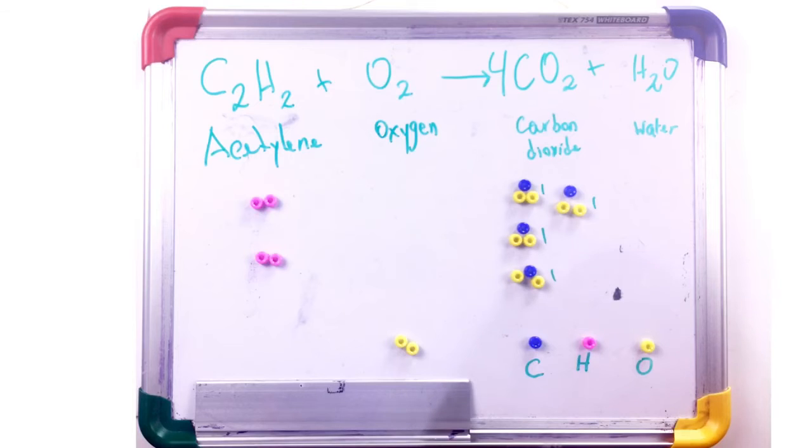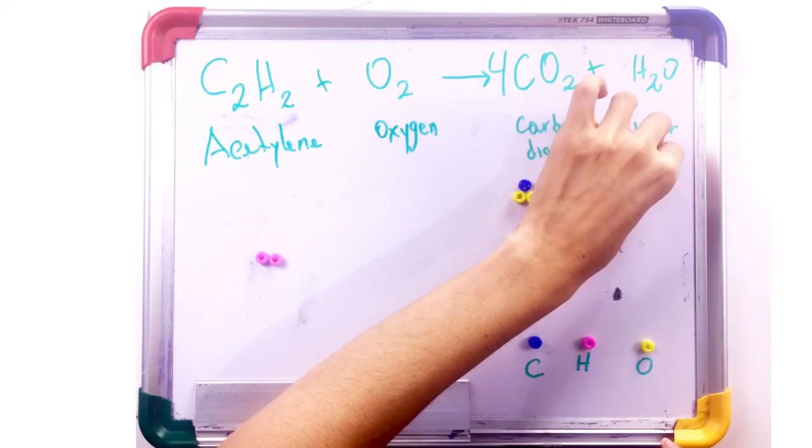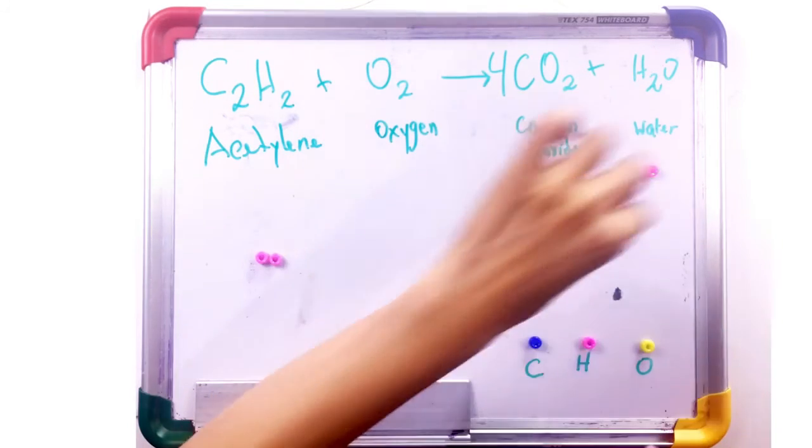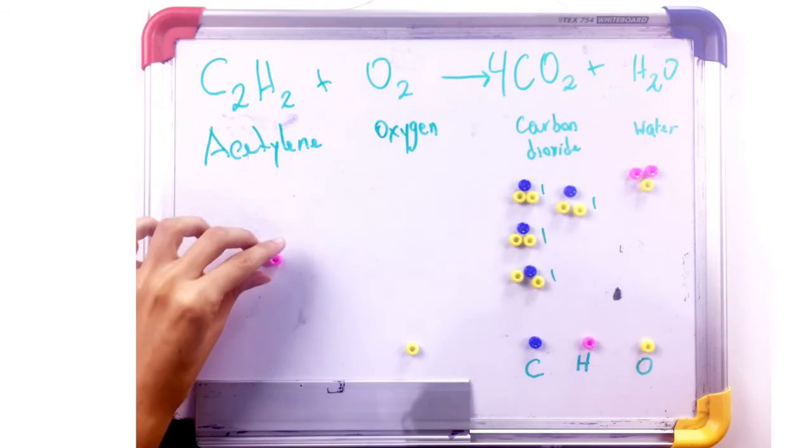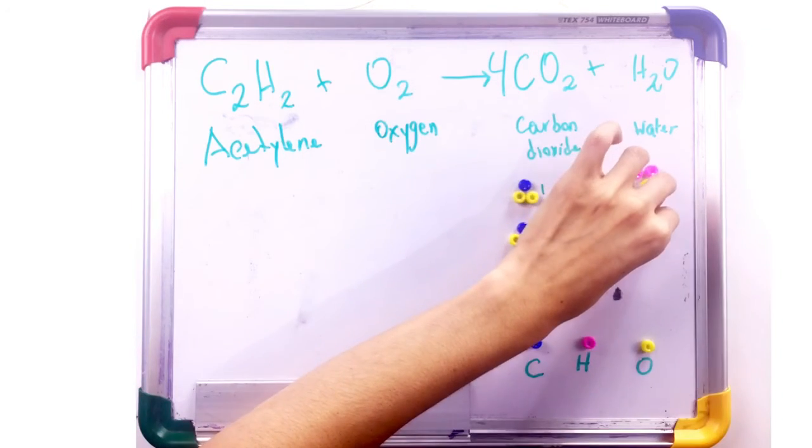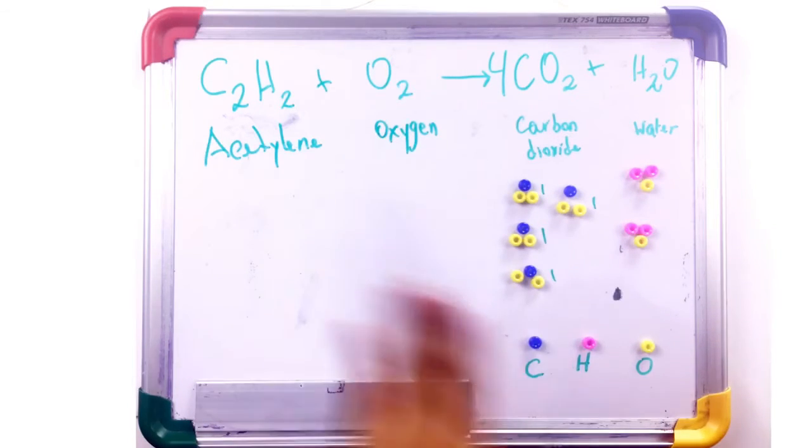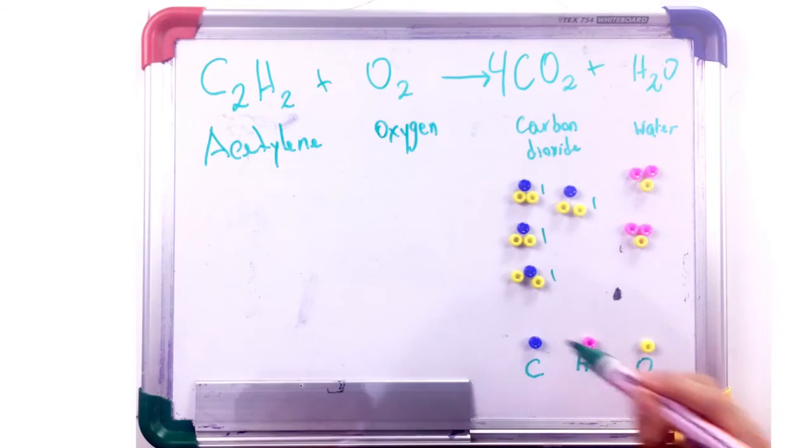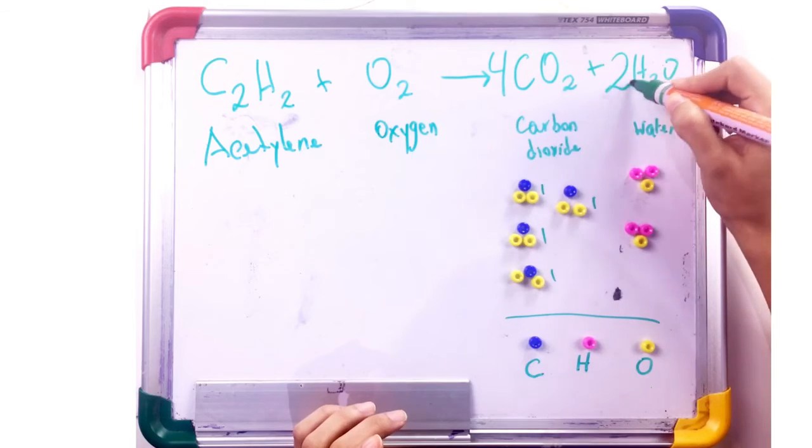Next, we need to make water. For water, we need hydrogen. Remember hydrogen was pink. So we need H2. So that's two hydrogen and one oxygen that we have left from our oxygen. We were only able to make two water molecules. So that is what we place here.